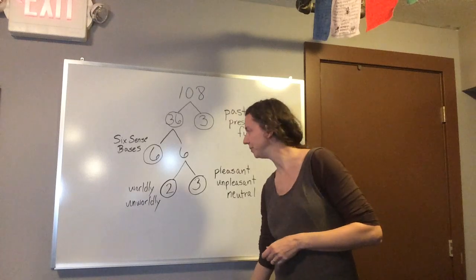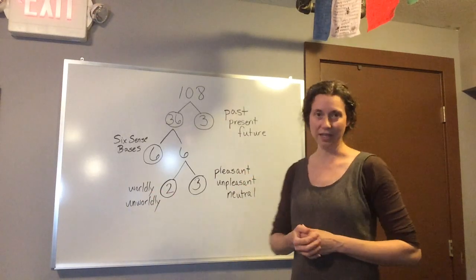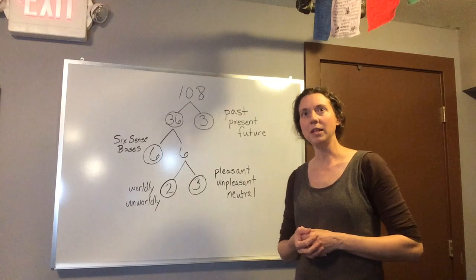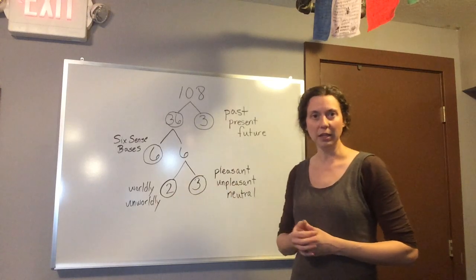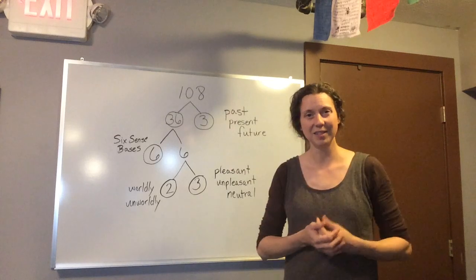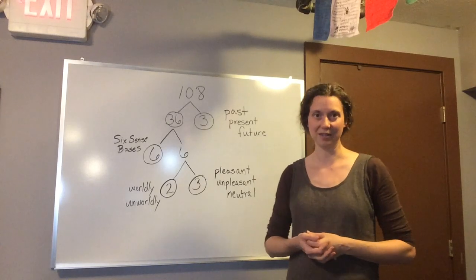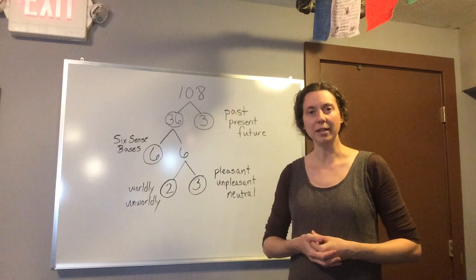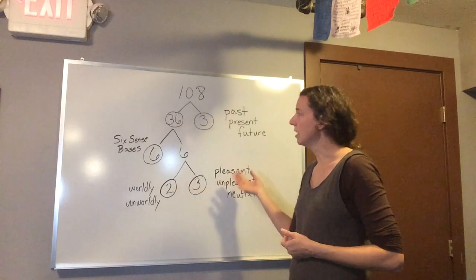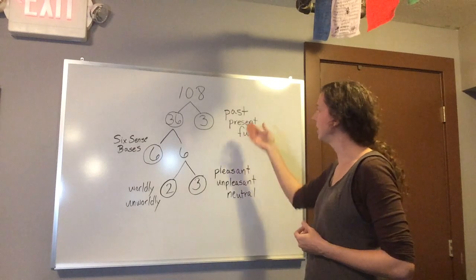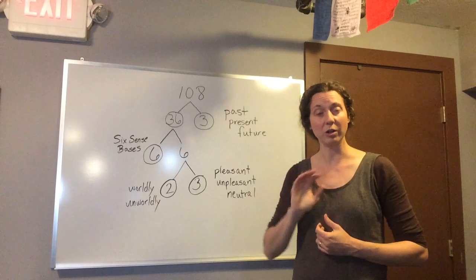Let me describe that to you. A worldly, pleasant feeling would be something that just feels good to us. And that worldly, pleasant feeling we could have through our eyes. Perhaps we see something that is pleasant to us, a beautiful sunset. That would be a worldly, pleasant sight. And that worldly, pleasant sight could have happened in the past, in the present, or maybe it's going to occur in the future.